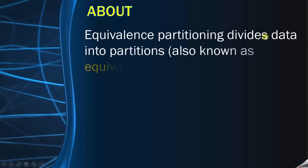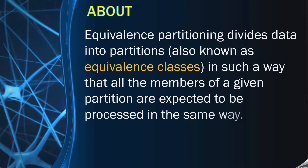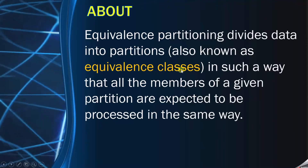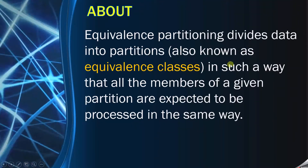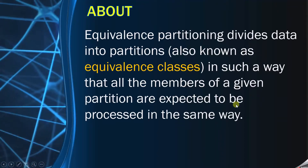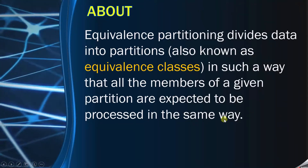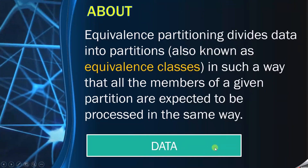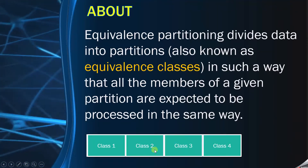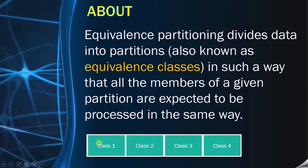Equivalence Partitioning divides data into partitions. You will get a complete data, and that data you have to divide. Each of those partitions is known as equivalence classes. You have to divide data in such a way that all the members of a given partition are expected to be processed in the same way. Suppose you have complete data — you have to make partitions out of it. So suppose we have made four partitions, and each of these partitions is known as equivalence classes.